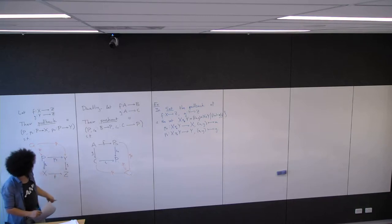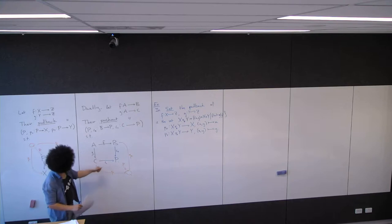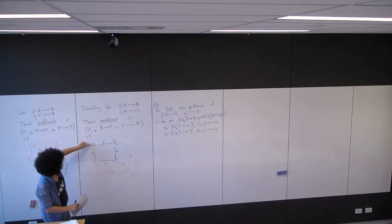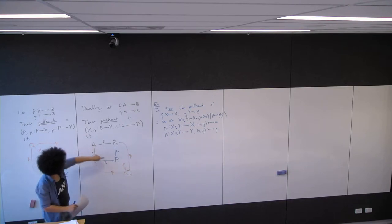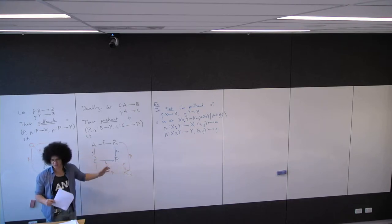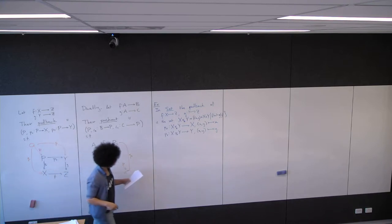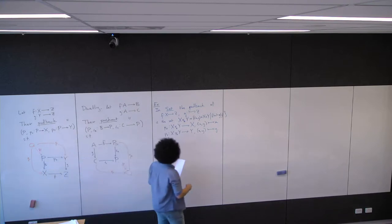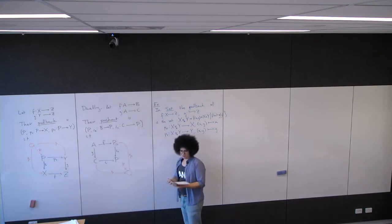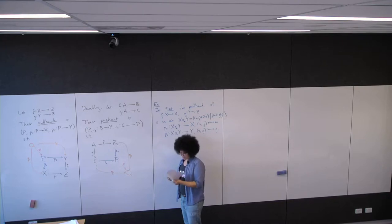Similarly, if Z is the initial object, then this is going to be a coproduct. That's a good exercise to think about — it doesn't take too much thinking to see that it's true.